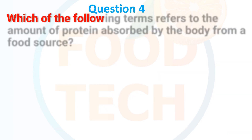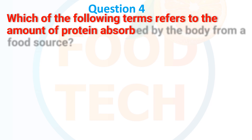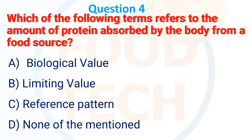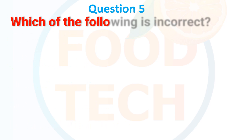Question 4. Which of the following terms refer to the amount of protein absorbed by the body from the source? A. Biological value. B. Limiting value. C. Reference pattern. D. None of the mentioned. The answer is A: biological value. Question 5. Which of the following is incorrect?